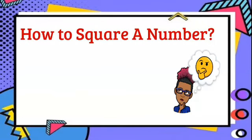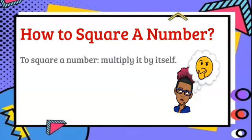How to square a number? To square a number, we simply multiply that number by itself.